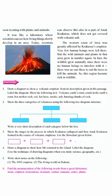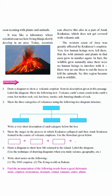The western coast of Java was greatly affected by Krakatoa's eruption. Very few human beings were left there. But the wild animals and plants in that area grew in number again. In fact, the wildlife grew naturally since there were no human beings to interfere with it — no one to cut the trees or kill the animals. So this region became rich in wildlife.